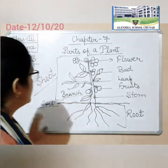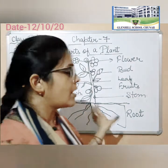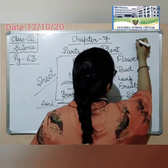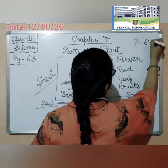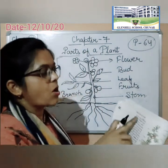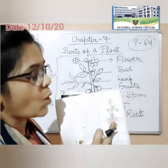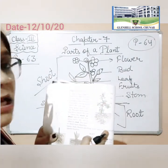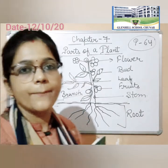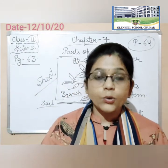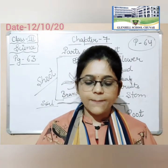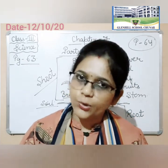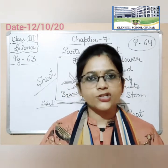Okay students, so got it. One more thing — aapko yeh jo diagram page number 64 pe diya hua hai, Parts of a Plant — so you have to draw this diagram. Yeh jo diagram hai, aapko aapki science ki notebook mein karni hai. Chapter 7 ki Parts of Plant ki jo diagram hai, that you have to do in your science notebook. Okay students, it is your today's homework.